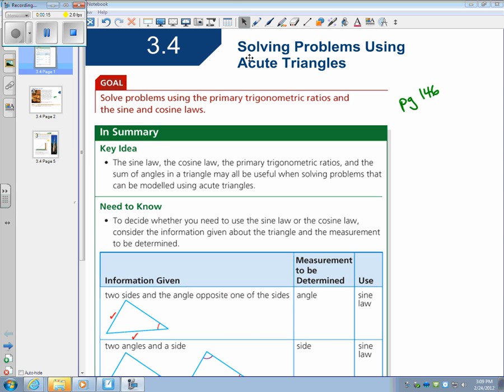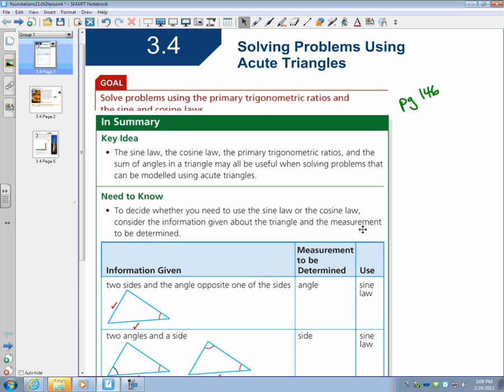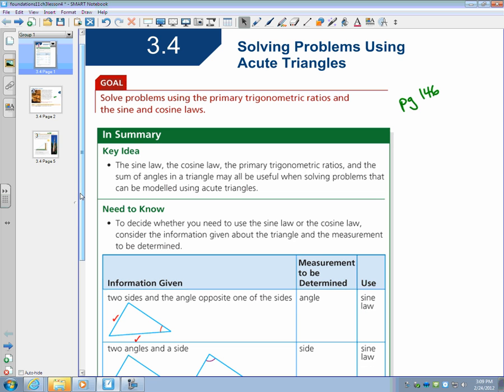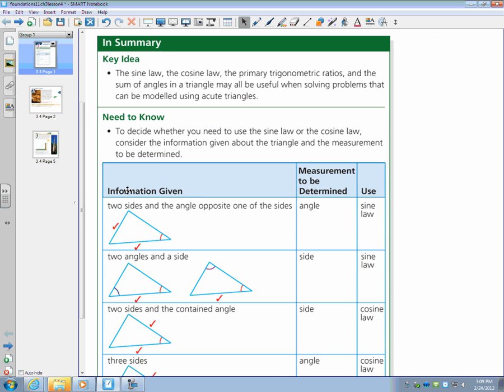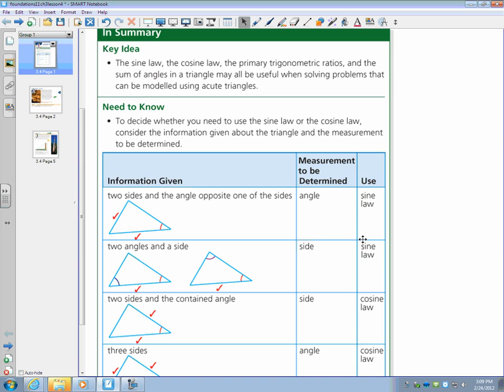I'm looking on page 146, a beautiful summary of strategies. So what we need to know, you have to decide. Sine, cosine, and tan are easy to decide because we know those. However, using sine or cosine law, this table sums up when to use it. First of all, you look at what information you're given, what you're trying to figure out, and it tells you what to use.